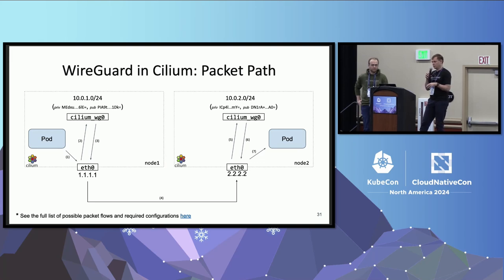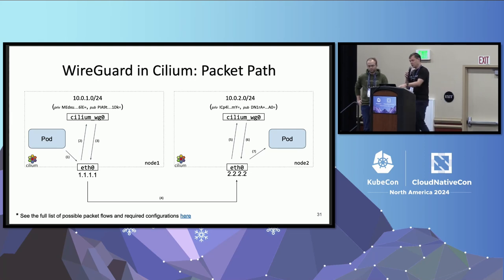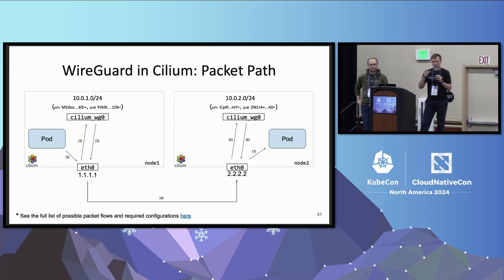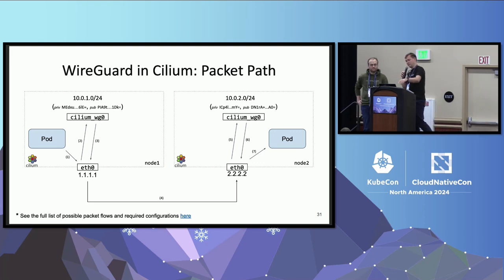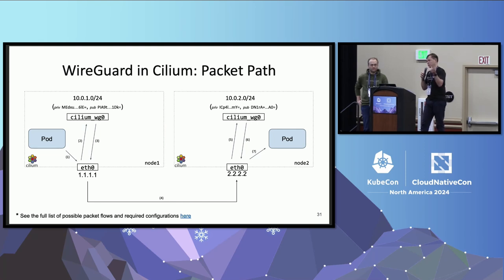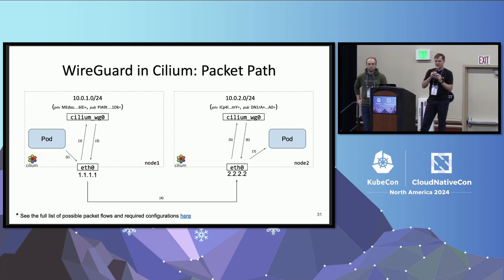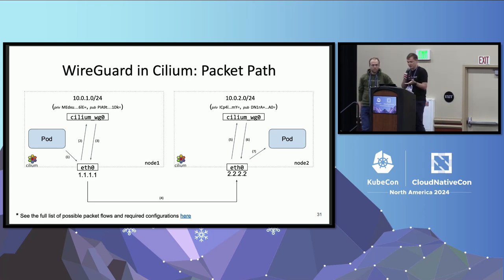Cilium allows encrypting traffic from many sources to many other destinations. Here we look at pod-to-pod traffic. A pod on the left wants to send traffic to the pod on the right. An eBPF program on native networking devices sees that traffic needs to be encrypted, sends it to the WireGuard device, which encrypts it and sets a specialized SKB mark to tell the native device that it should just be forwarded to the medium. Then it's sent to the other side, decrypted, and delivered to the pod. Session keys are rotated automatically and everybody is happy.